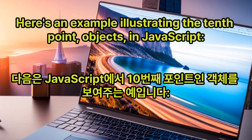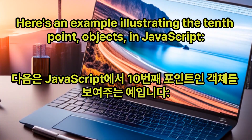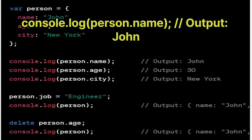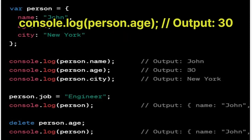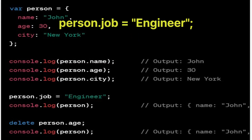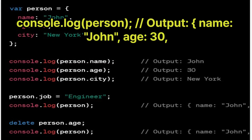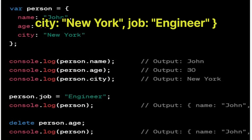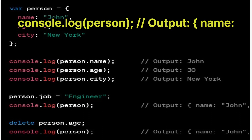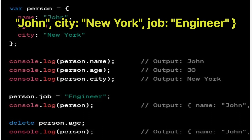Here's an example illustrating the tenth point, objects, in JavaScript: var person = { name: 'John', age: 30, city: 'New York' }. console.log(person.name) outputs 'John'; console.log(person.age) outputs 30; console.log(person.city) outputs 'New York'. person.job = 'engineer'; console.log(person) outputs {name: 'John', age: 30, city: 'New York', job: 'engineer'}. delete person.age; console.log(person) outputs {name: 'John', city: 'New York', job: 'engineer'}.